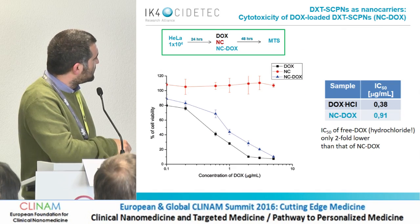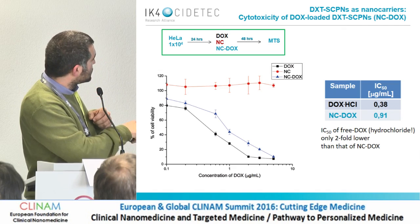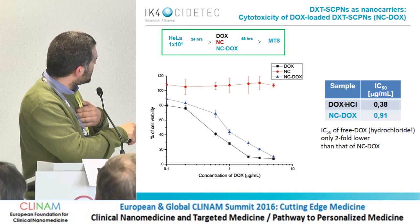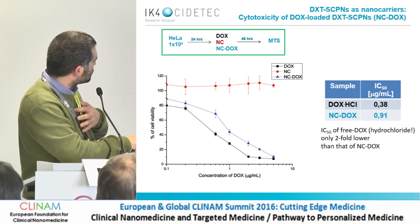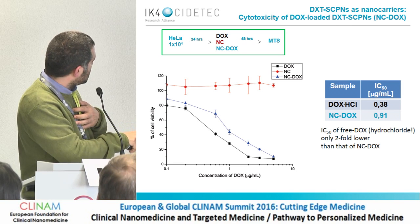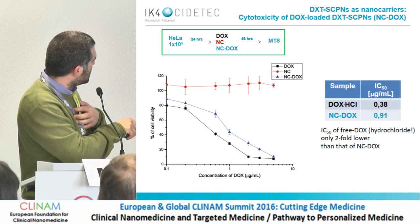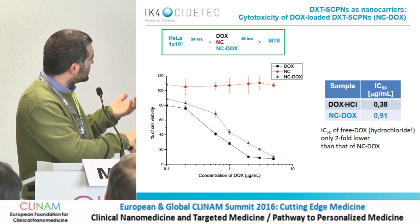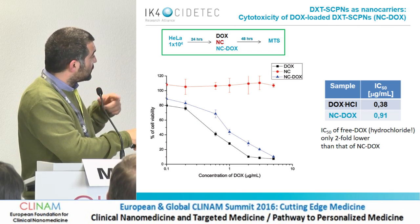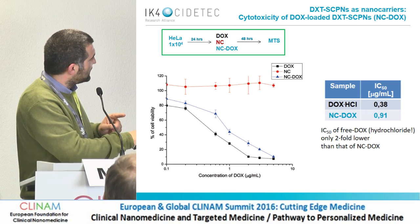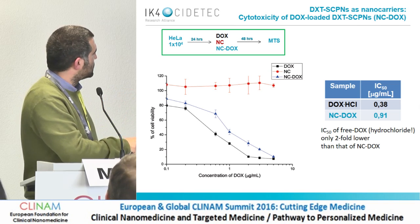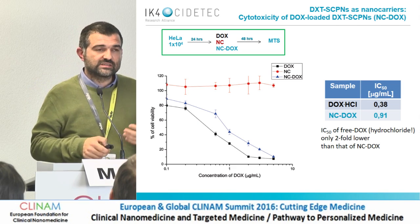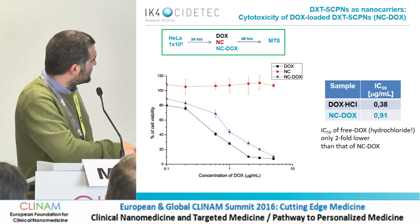We performed a cytotoxicity test showing that nanoparticles alone are not cytotoxic to cells at the tested conditions. When comparing free doxorubicin with nanoparticle-conjugated doxorubicin at the same concentration, we see a similar cytotoxicity profile — so the cytotoxicity of the nanoparticle is due to the drug loading. The free doxorubicin hydrochloride has an EC50 approximately twofold lower than the nanoparticle form, which was expected, but it was a success for us because the drug maintains its functionality.